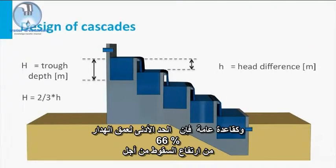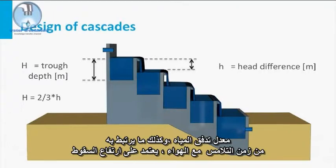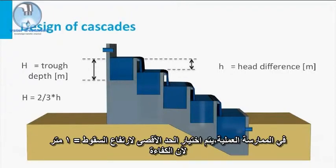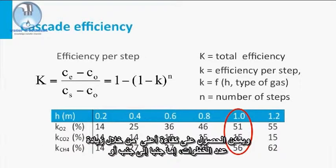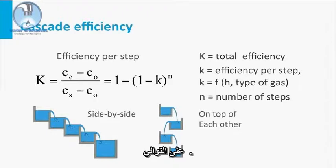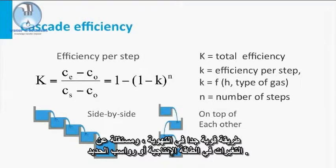As a rule of thumb, the trough has to have a minimum depth of 66% of the fall height in order to obtain sufficient contact time. The water flow rate, and directly linked to it, contact time with the air, depends on the fall height. In practice, a maximum fall height of 1 meter per step is chosen, because the efficiency barely increases above this height. A higher efficiency can be obtained by increasing the number of steps, either side by side or on top of each other. The efficiency of a cascade depends little on the hydraulic load, and is therefore a very robust way of aerating, independent of fluctuations in the production capacity or iron deposits.